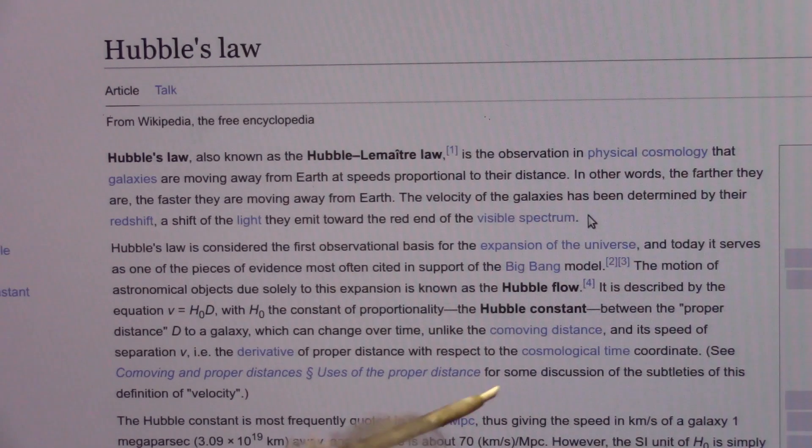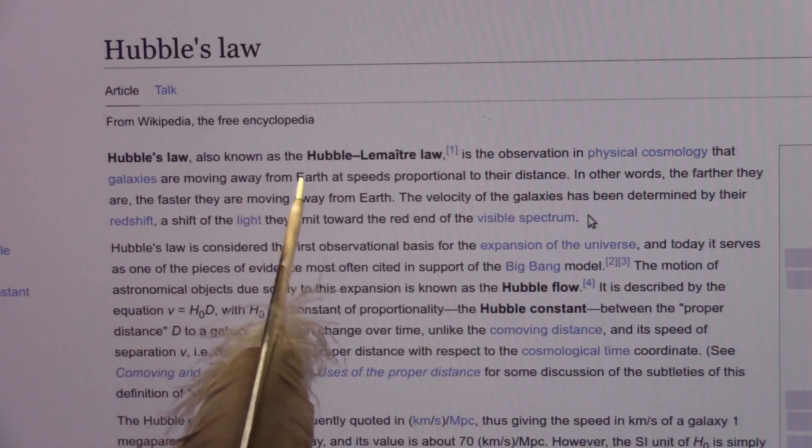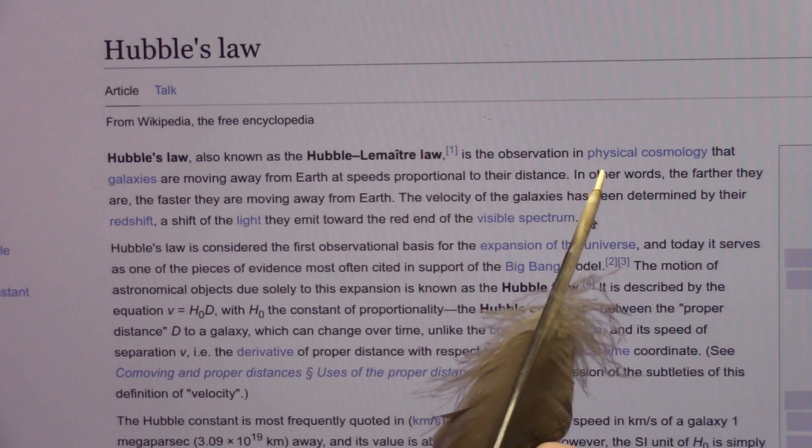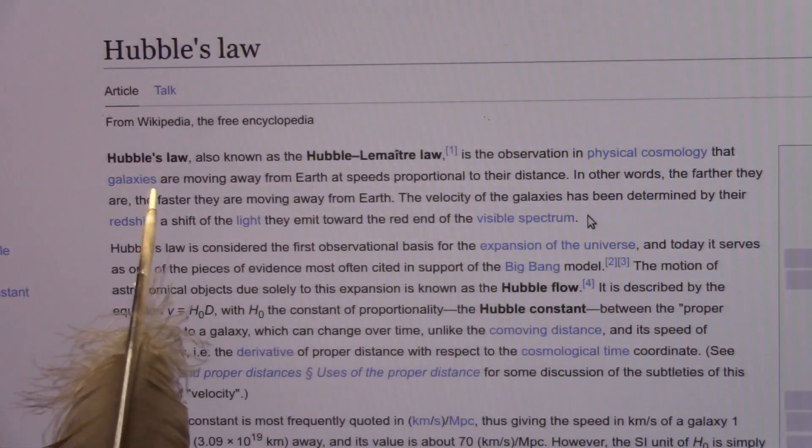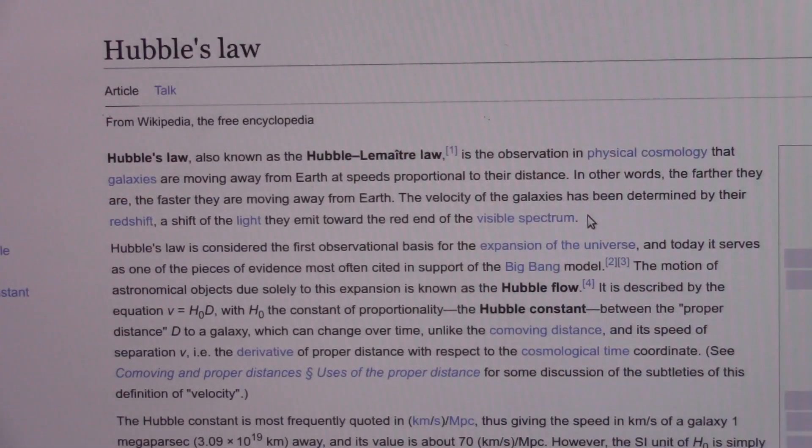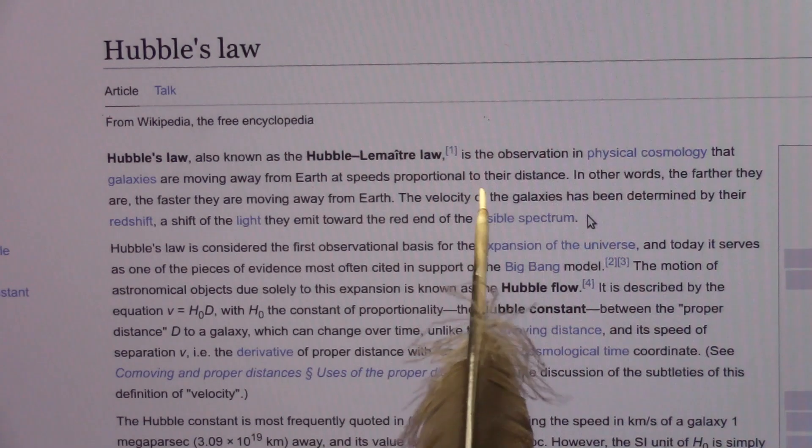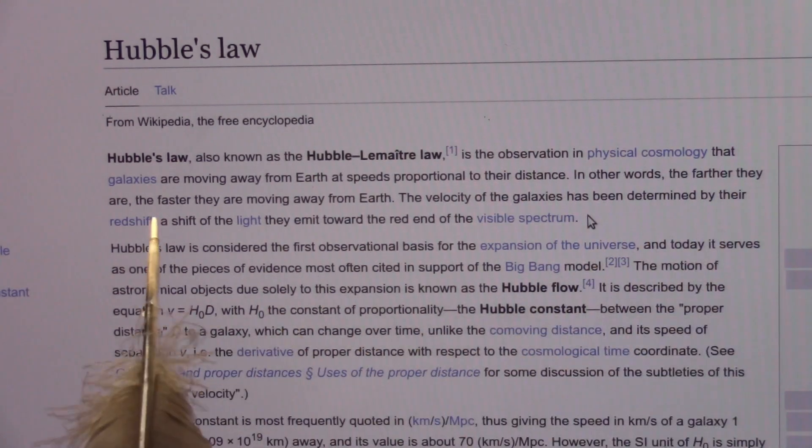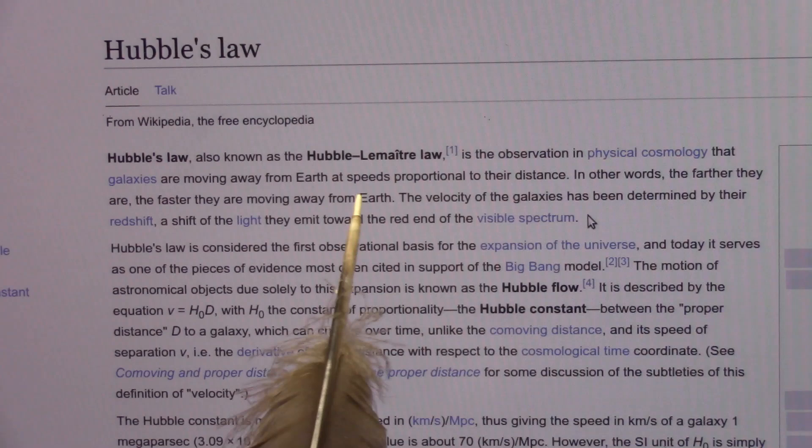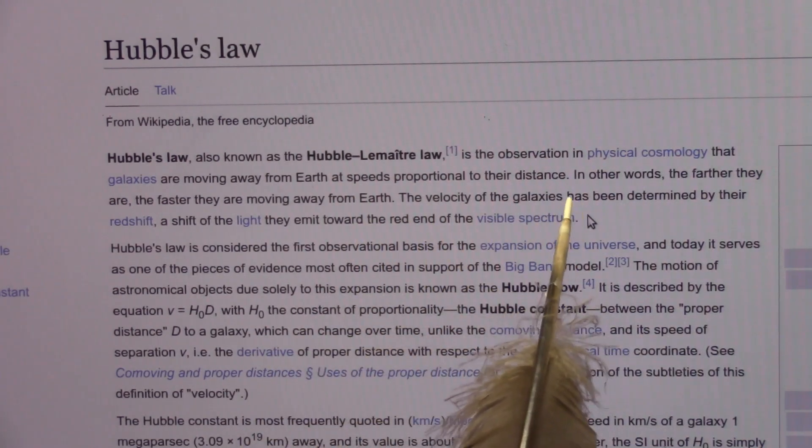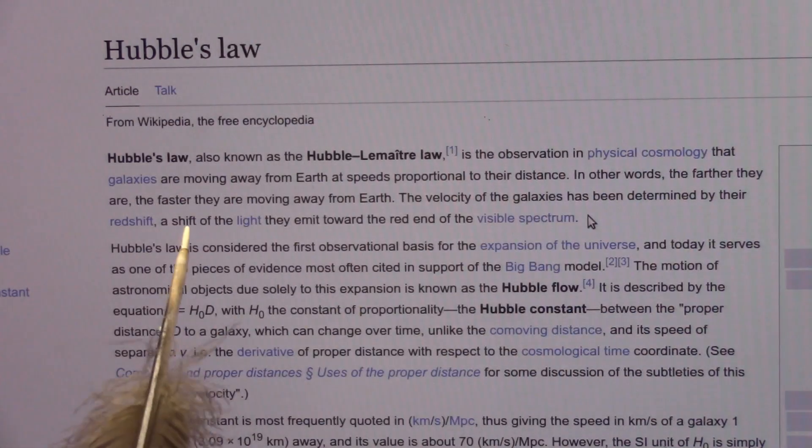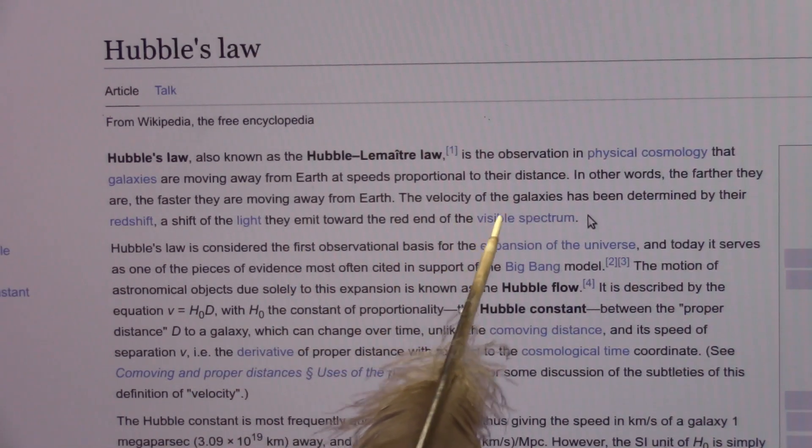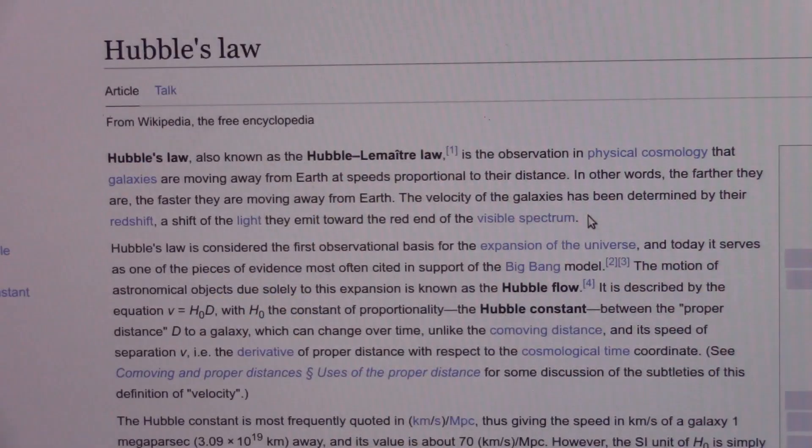Listen to this. This is stunning. Hubble's law, known as Hubble-Lamatre Law, is the observation in physical cosmology that galaxies are moving away from the Earth at speeds proportional to their distance. So they go a certain speed. The further they are, the faster they go. In other words, the farther they are out, the faster they are moving away from Earth. The velocity of the galaxies has been determined by their red shift, the shift of light they emit toward the red end of the visible spectrum.